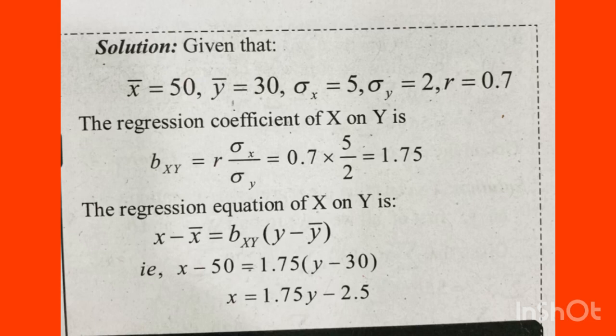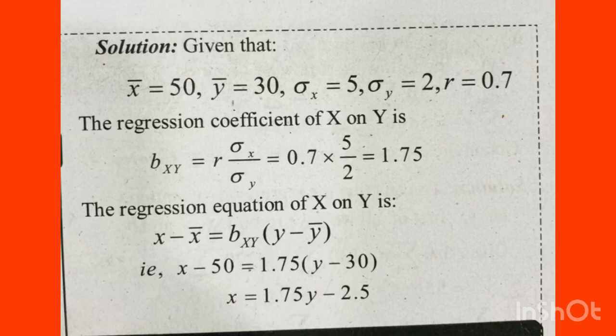We have the regression coefficient x on y. Using the theory, the relation between correlation and regression coefficients gives us: bxy is equal to r into sigma x divided by sigma y. Applying the values, bxy is equal to 0.7 into 5 divided by 2, which gives 1.75.